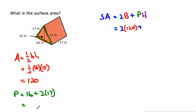So 16 plus 34—two 17s is 34—that's 50. And the height of the prism is the distance between the two triangles, and that's another 17.